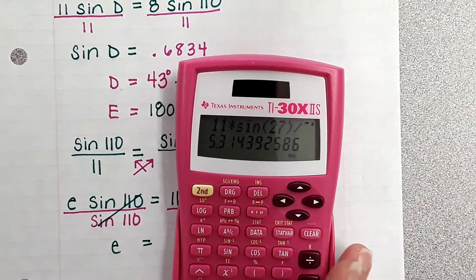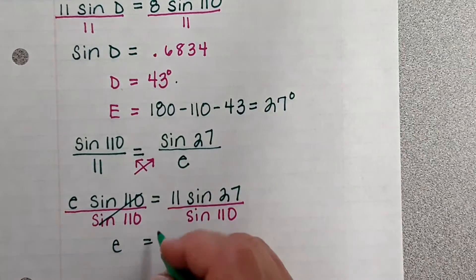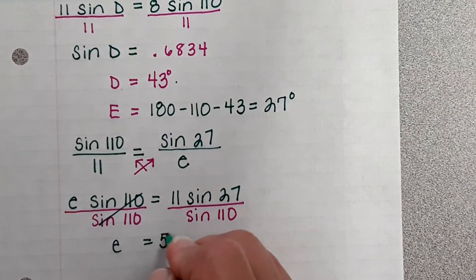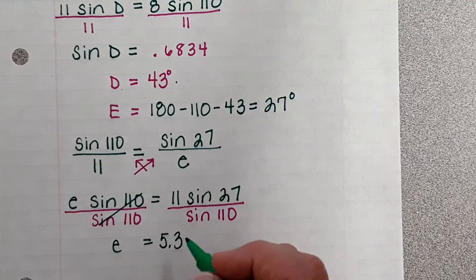And did you get 5.3? So we round sides to the nearest tenth. We're going to round angles to the nearest degree.